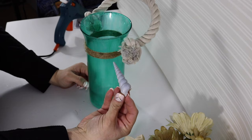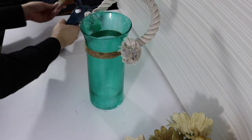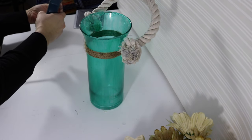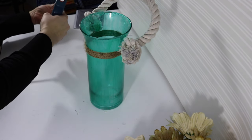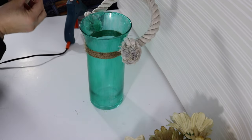So now I just have this seashell and I spray painted that with a little bit of light blue and pink and I'm just gonna glue that onto the twine.